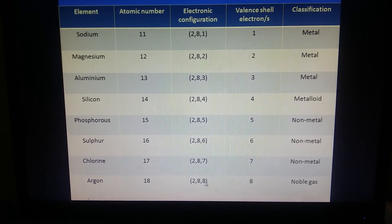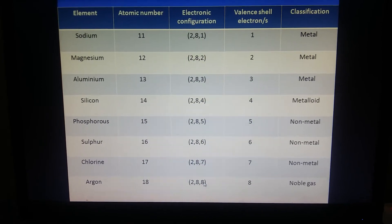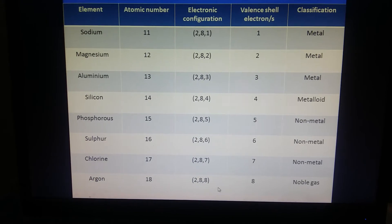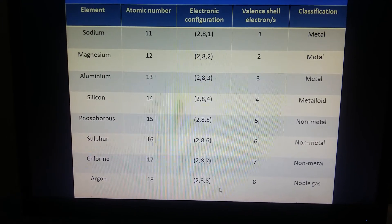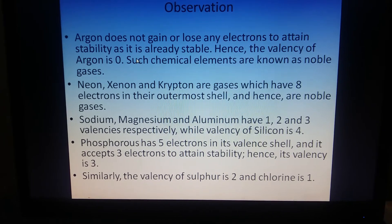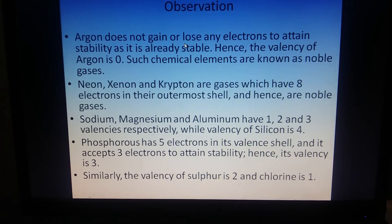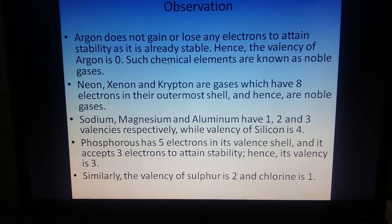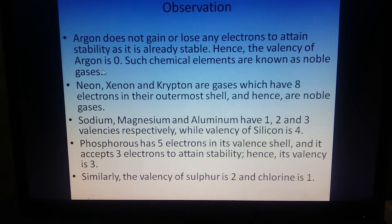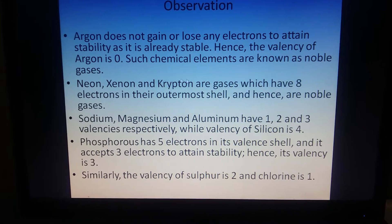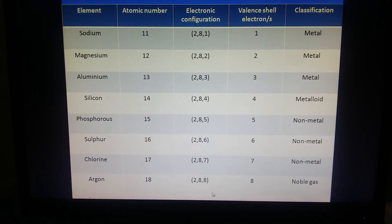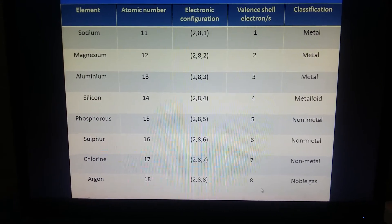8 electrons is the number all elements want in their outermost shell. Argon is already stable, so it does not gain or lose any electrons. The valency of argon is 0, because none of its electrons take part in chemical reactions.